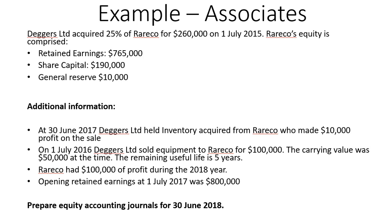Straight into our example: Degas Limited acquired 25% of RareCo for $260,000 on 1 July 2015. RareCo's equity is comprised of three accounts. At 30 June 2017, Degas Limited held inventory acquired from RareCo, who made $10,000 profit on the sale. On 1 July 2016, Degas Limited sold equipment to RareCo for $100,000; the carrying value was $50,000 at the time and the remaining useful life is five years. RareCo had $100,000 of profit during the 2018 year, and opening retained earnings at 1 July 2017 was $800,000.